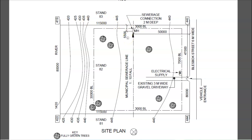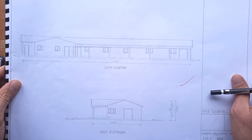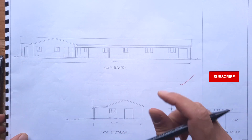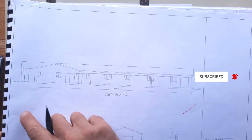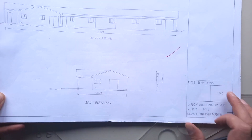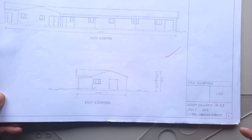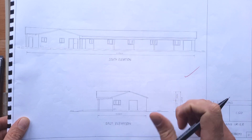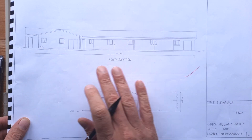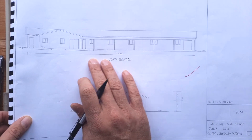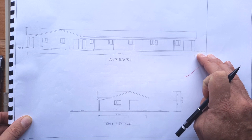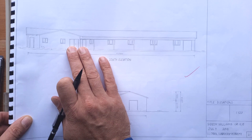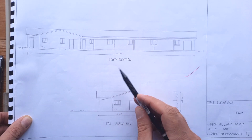Here we have an example of a previous year's elevation requirements. Remember it's a different project, but there are things we can take from it. First of all your border and title block with your name, page number, and title, then two elevations drawn to the same scale as your floor plan. In this example it was on a flat piece of ground with no contours. This was a south elevation.